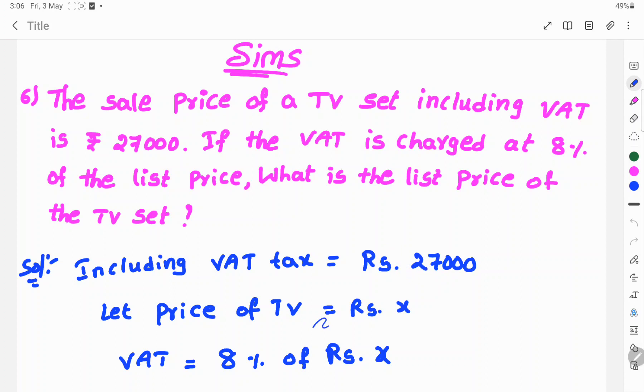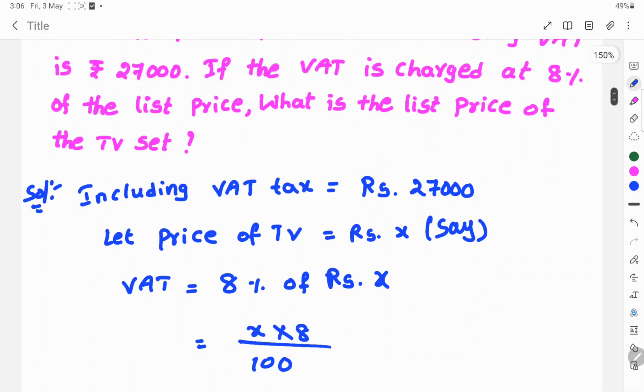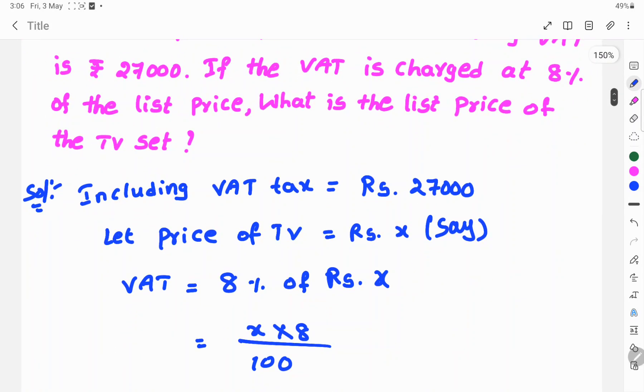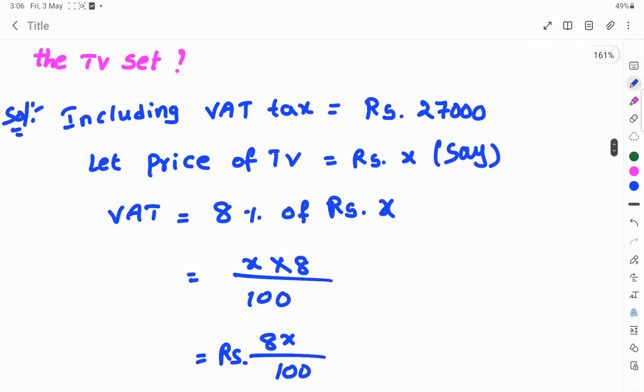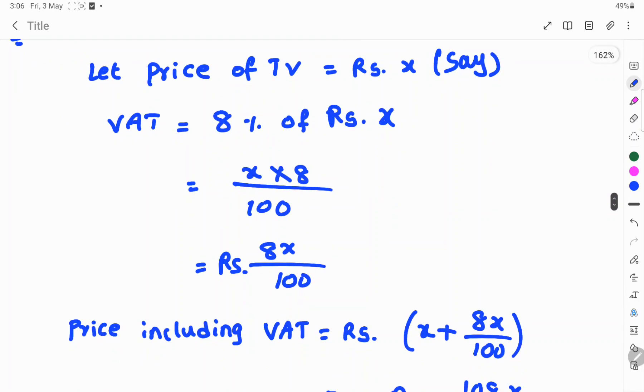Let price of TV be x. VAT is equal to 8% of rupees x. Then, x into 8 by 100. That means 8% means 8 by 100 of x rupees. So, rupees 8x by 100.